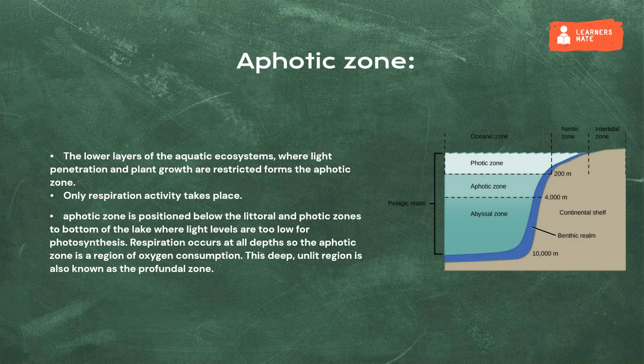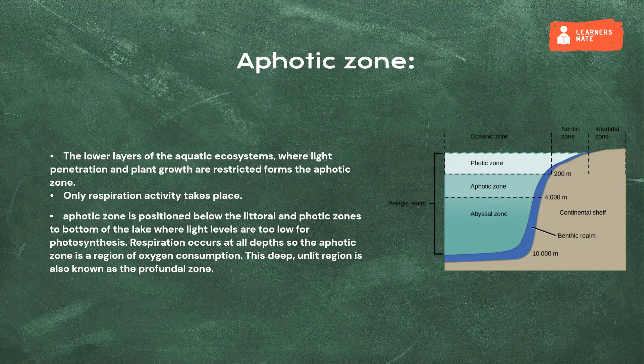The aphotic zone comprises the lower layers of the aquatic ecosystem where light penetration and plant growth are restricted. Only respiration activity takes place. The aphotic zone is positioned below the littoral and photic zones to the bottom of the lake where light levels are too low for photosynthesis. Respiration occurs at all depths, so the aphotic zone is a region of oxygen consumption. This deep, unlit region is also known as the profundal zone.